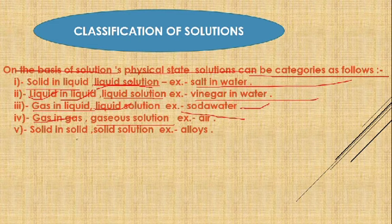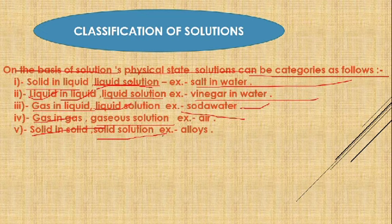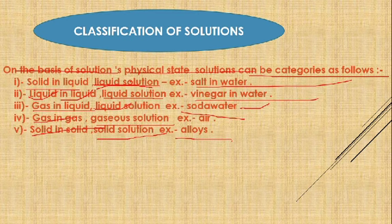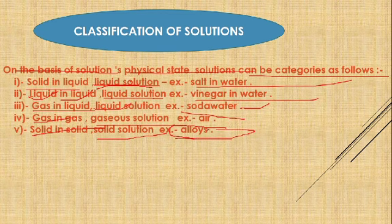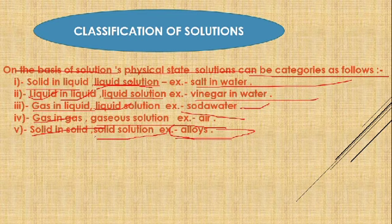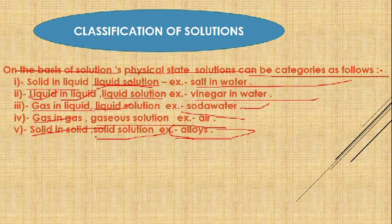Solid in solid solutions are called solid solutions, like alloys. Alloys are generally solid and are obtained by mixing metals in their molten state. Examples include brass (copper and zinc), aluminium bronze, duralumin, and gun metal.